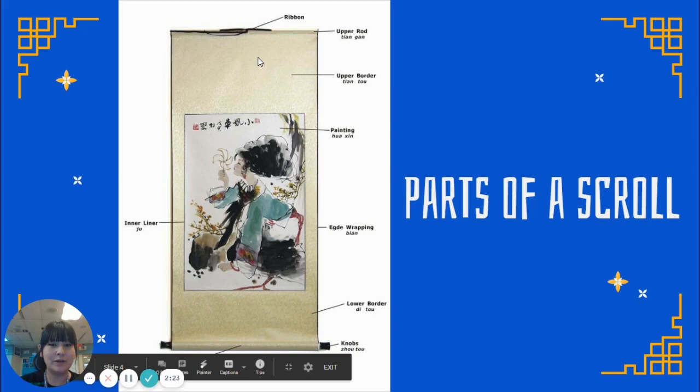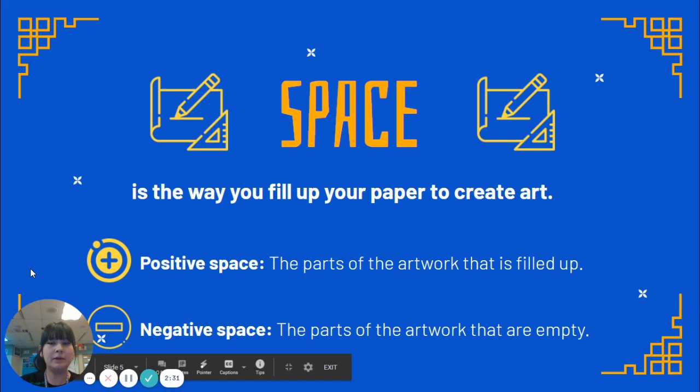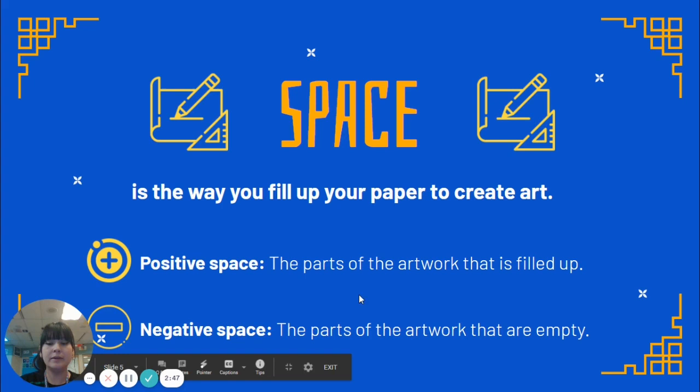In this project, we're going to be learning the element of art called space. Space in art is the way you fill up your paper to create your artwork. Positive space is the parts of the artwork that is filled up — so that's where you do your actual drawing. The negative space is the parts of the artwork that are empty, so that might be the sky or the ground where it's kind of empty and there's really not much happening.